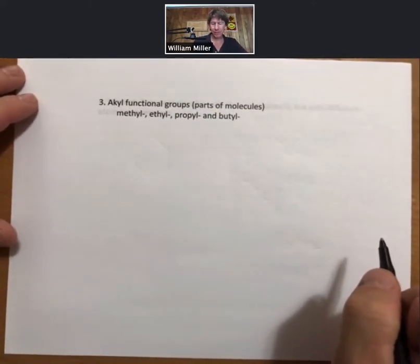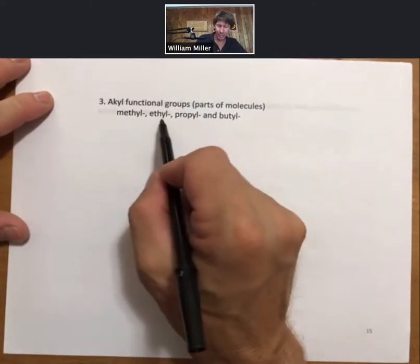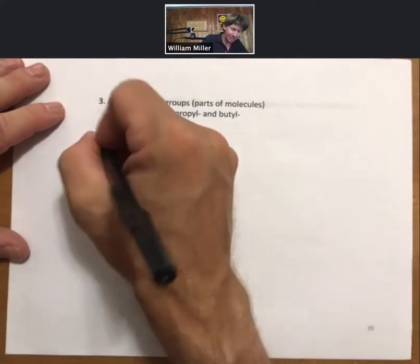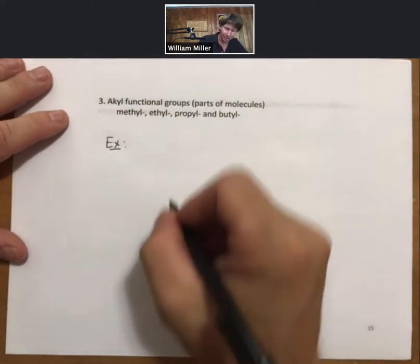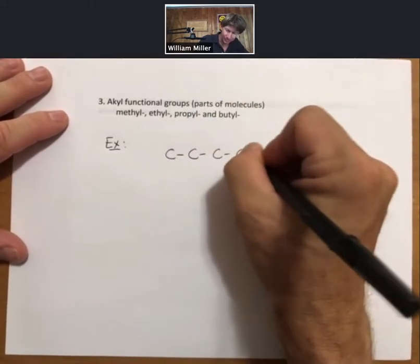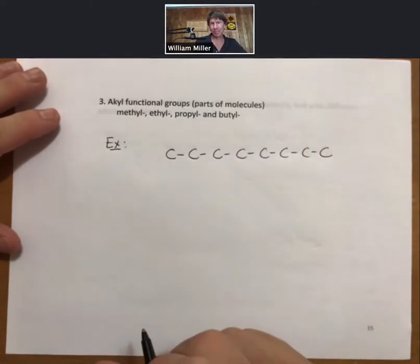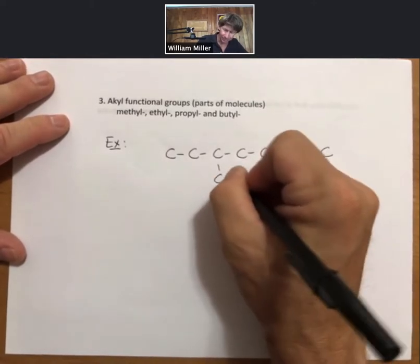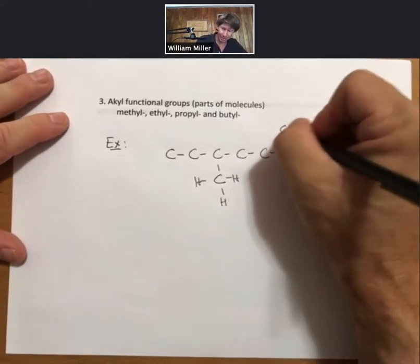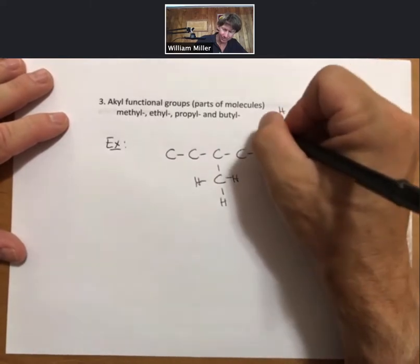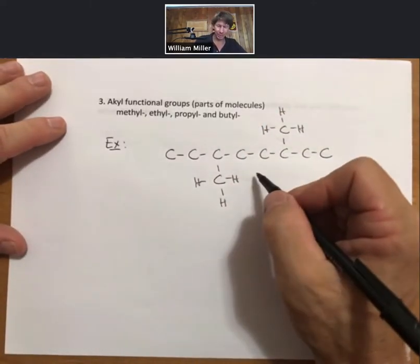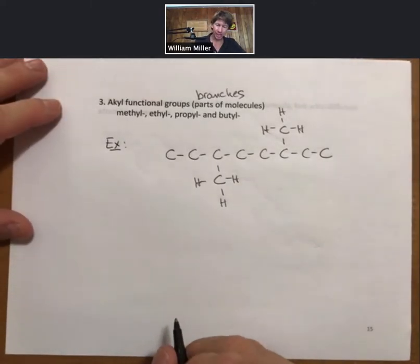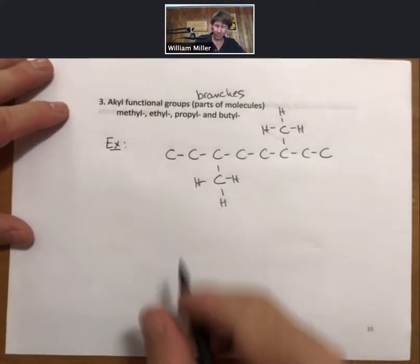Alkyl functional groups, these are going to be parts of molecules, and they're called methyl, ethyl, propyl, and butyl. And when I say parts of molecules, if we take, as an example, the following molecule, something with eight carbons in it, and off of the sides, and off of another side, we have branches. Those are what are called alkyl functional groups. They're branches or parts of molecule off of what's considered the backbone.